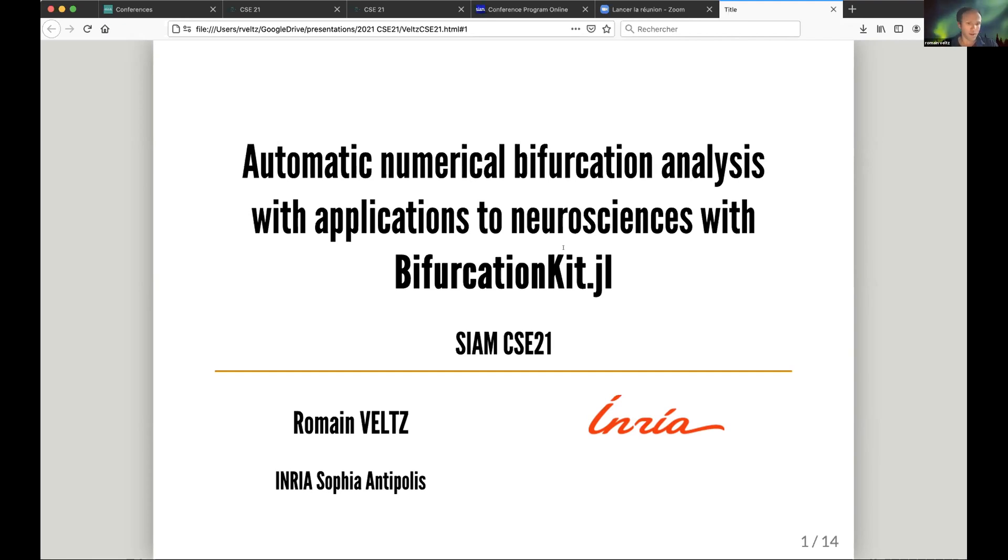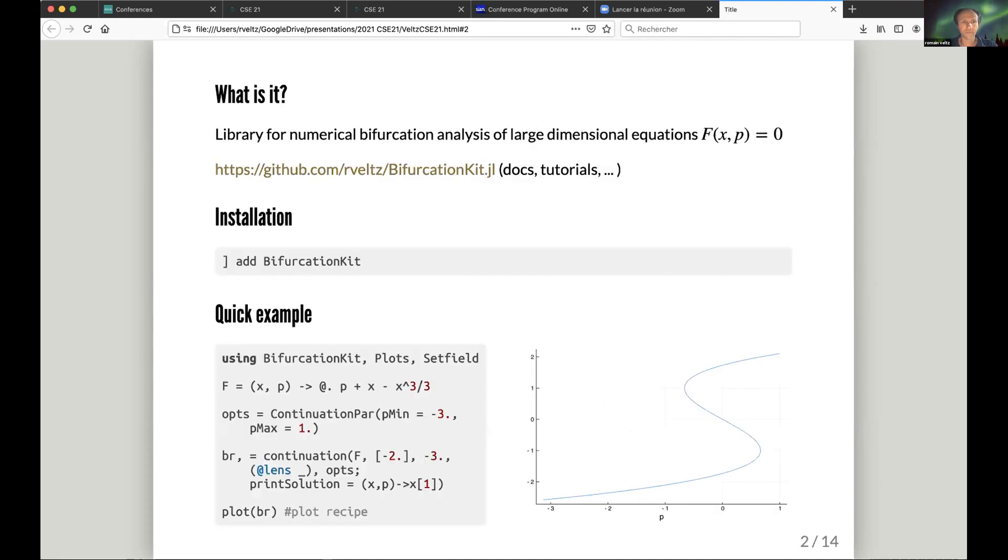What is it? Well, BifurcationKit is a library for numerical bifurcation analysis of large-dimensional equations, basically solving F(x) = 0. It's a registered package, so it's very easy to install - just type 'add BifurcationKit' in the package manager, and it comes with a lot of tutorials.